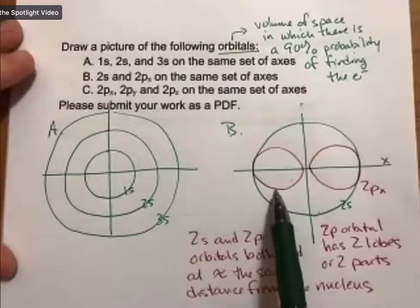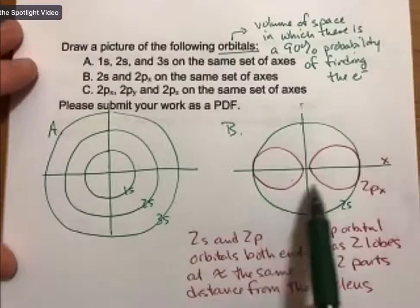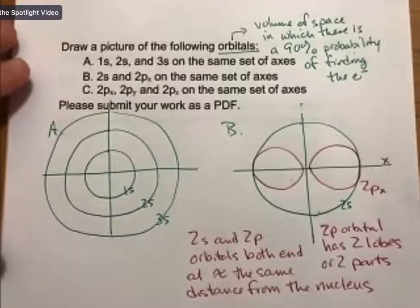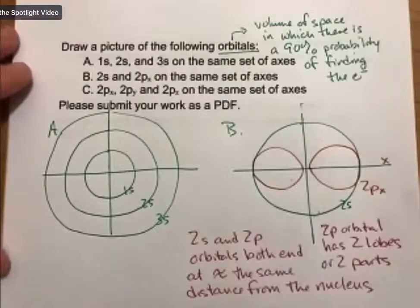Anyway, so in summary, a p orbital has two lobes. It's often called a dumbbell and it's often represented by two balloons because there can be balloon shapes as well.